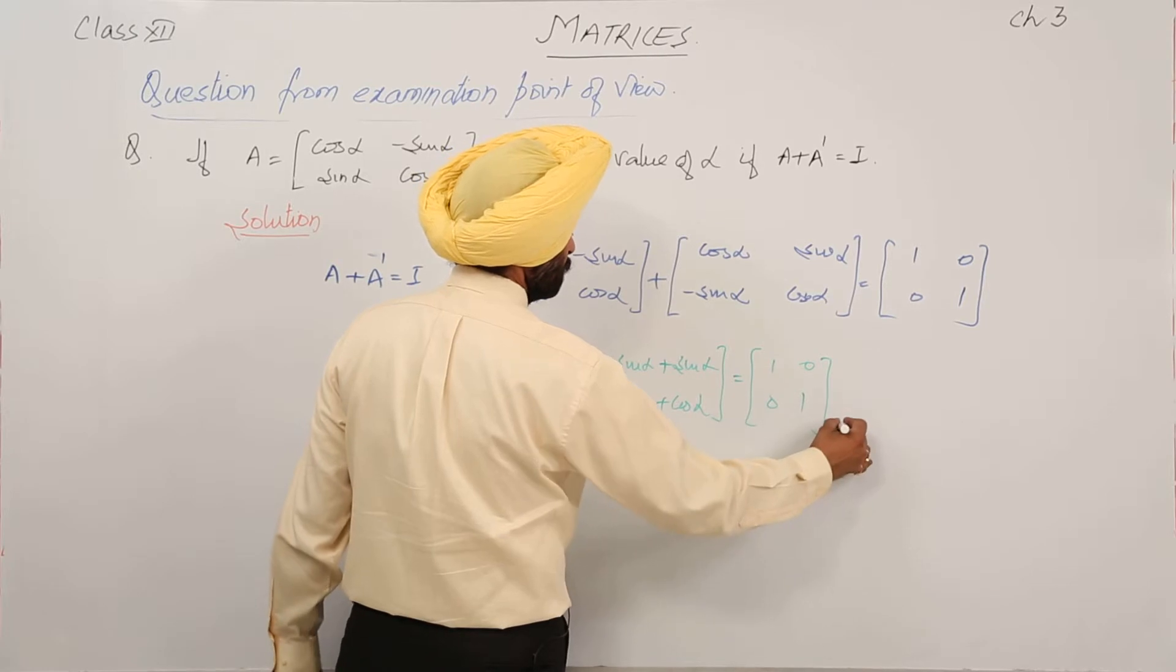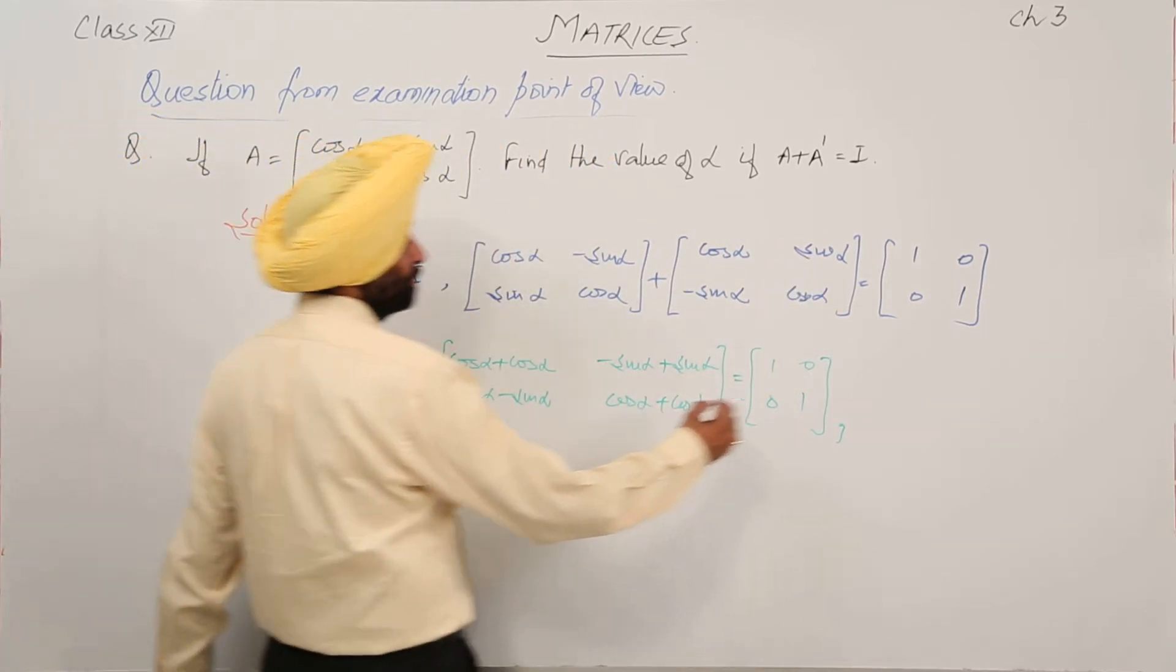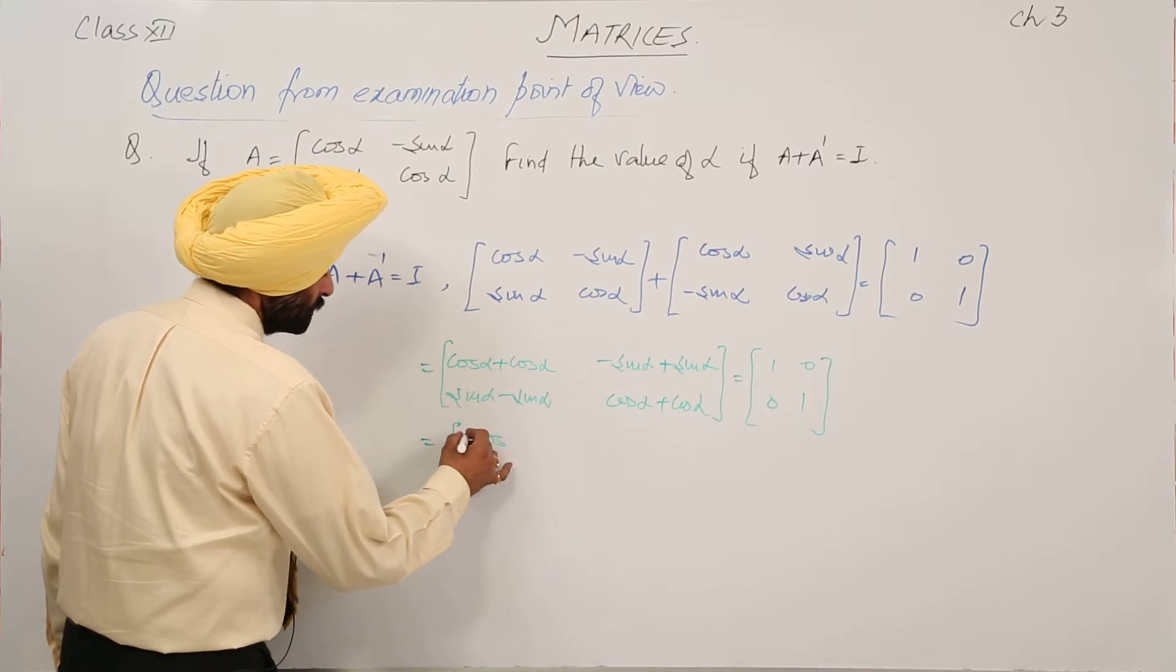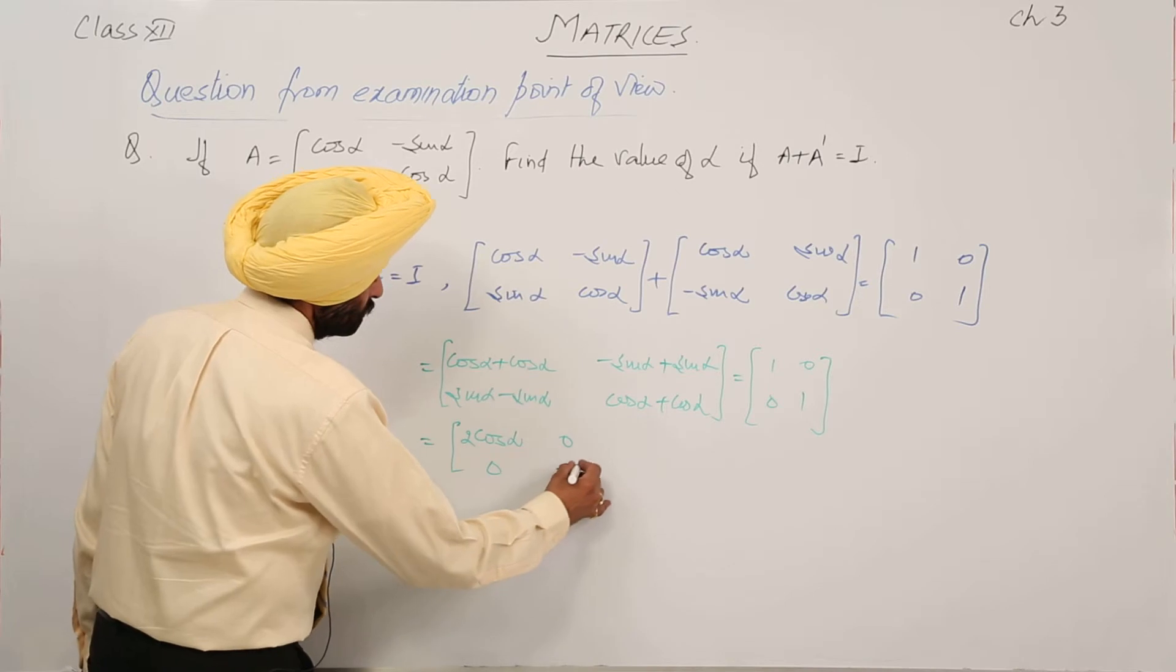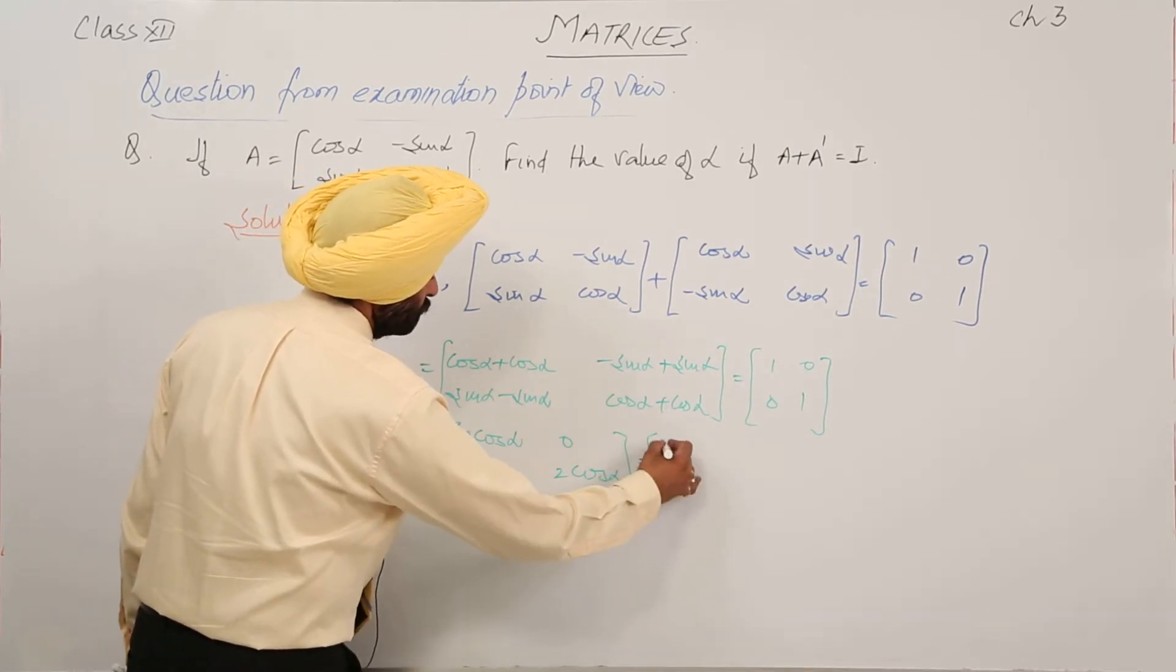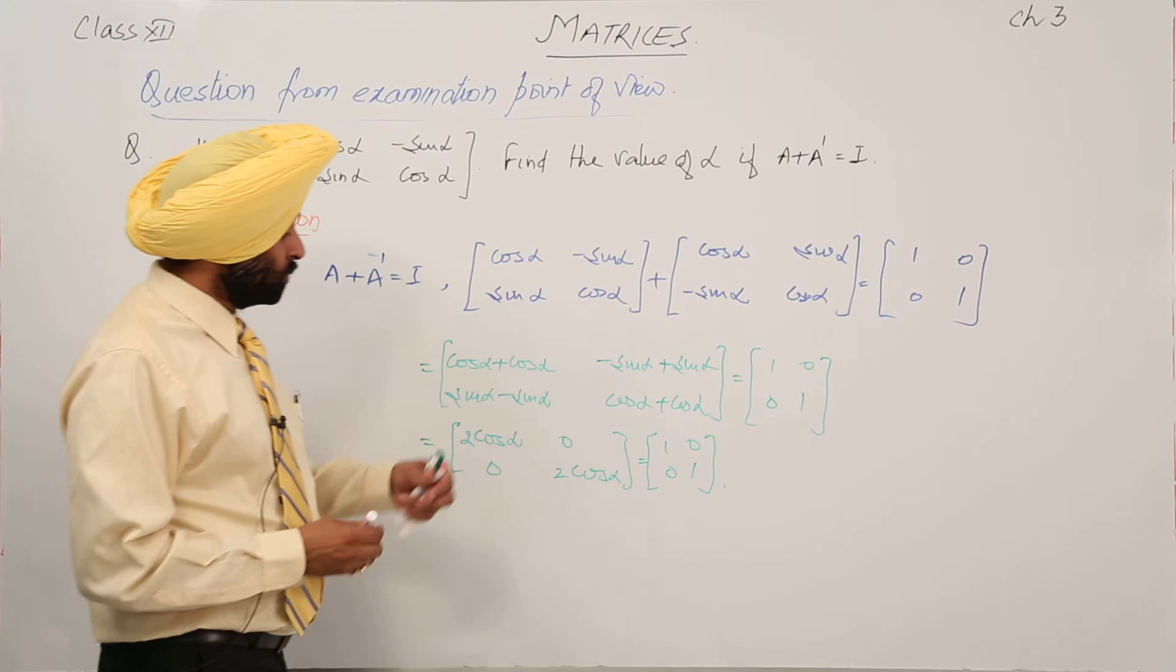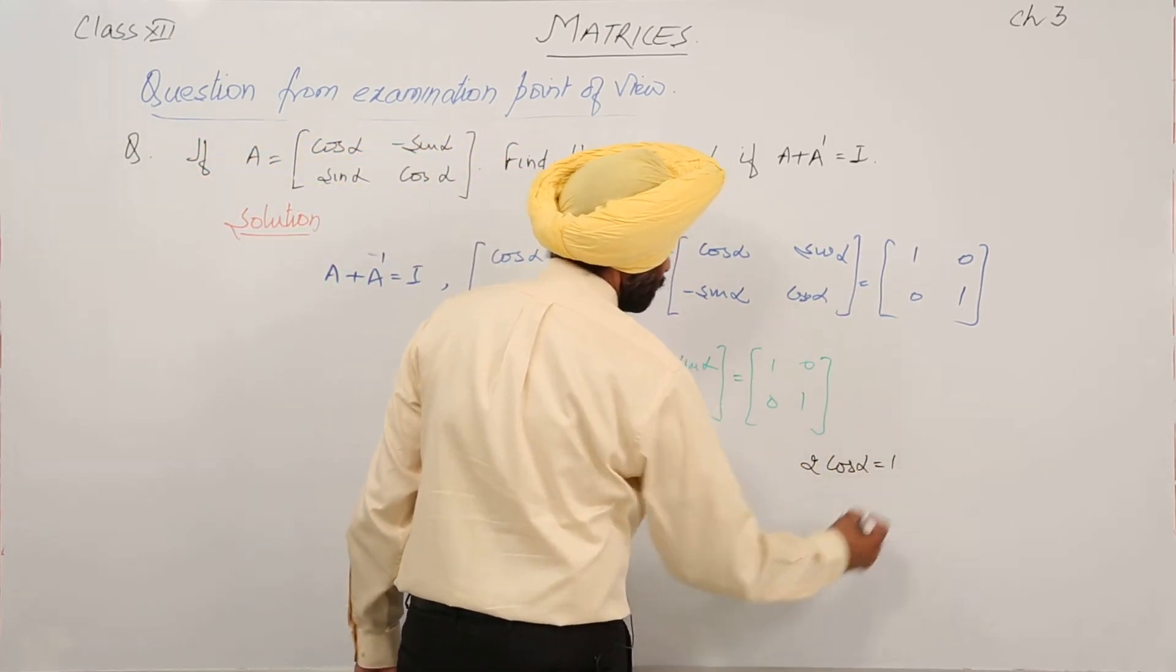So cos alpha plus cos alpha. Now equating: 2 cos alpha equals 1.